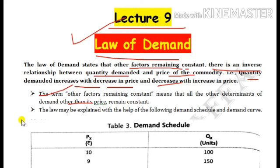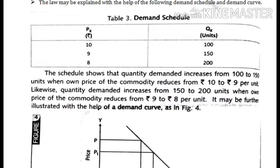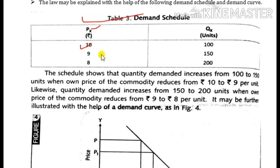اب اس law کو ہم ایک table اور diagram کے ذریعے — demand schedule اور demand curve کے ذریعے — سمجھنے کی کوشش کریں گے۔ Demand schedule ایک tabular representation ہوتی ہے جس میں ہم price اور quantity demanded کے درمیان relationship represent کرتے ہیں۔ For example، ایک consumer market میں جاتا ہے اور commodity X لاتا ہے۔ جب اس commodity کا price 10 rupees ہوتا ہے تو وہ consumer 100 units buy کرتا ہے۔